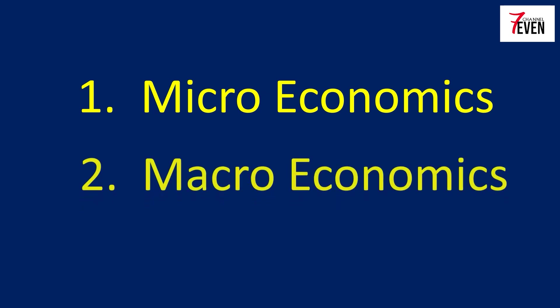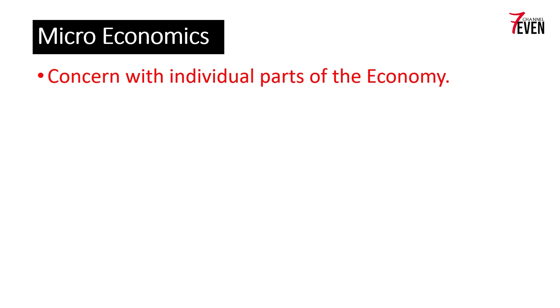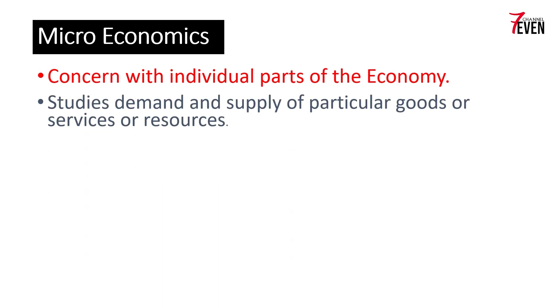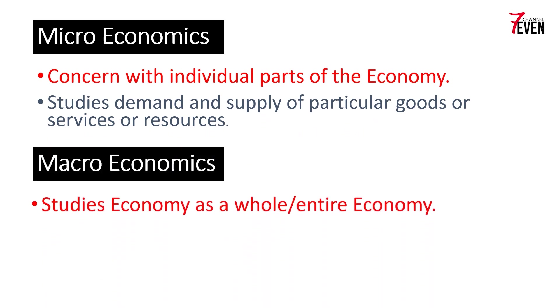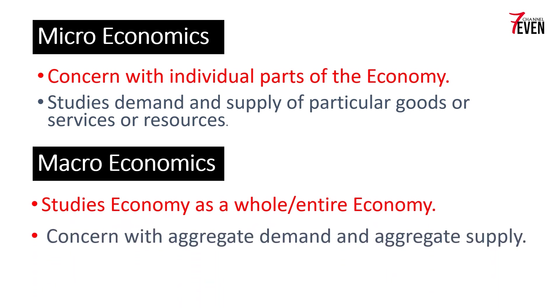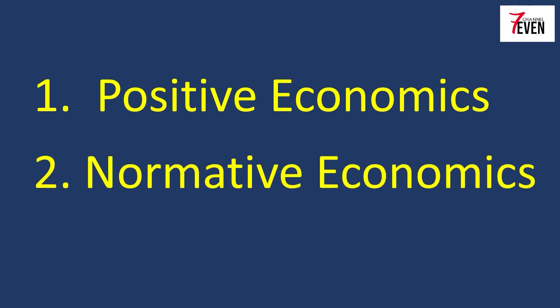Economics is divided into microeconomics and macroeconomics. Microeconomics is the study of individual parts of the economy, which studies demand and supply of particular goods, resources, or services. Macroeconomics is the study of the economy as a whole, or the entire economy, which studies aggregate demand and aggregate supply.